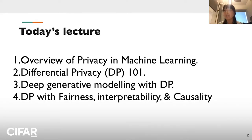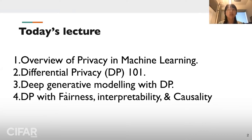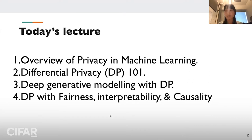Today's lecture, during these 45 minutes, I will talk about the overview of privacy research in machine learning, with a focus on differential privacy. I will give a basic tutorial on differential privacy, then an example of how deep learning can be combined with differential privacy. I will end with some interesting trade-offs between differential privacy and other emerging notions in ML, such as fairness, interpretability, and causality.